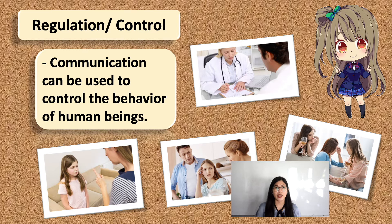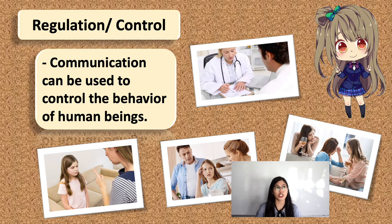Another example is parents' instructions to their children. For instance, you are at a party and your mother texts you to come home at exactly 9 o'clock — in this case, you are being controlled. Other examples include a friend giving advice on a course of action, employers scolding or giving orders to employees, and customers making orders. Those are all examples of regulation or control.